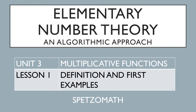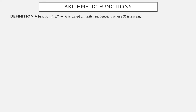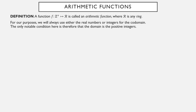We start the third unit in the course, beginning with multiplicative functions. But before we talk about multiplicative functions, we're going to define something called an arithmetic function. A function is called arithmetic if its domain is the positive integers 1, 2, 3, 4, and so forth, and the codomain is any ring. For us, the codomain is always going to be real numbers or integers. The only real notable condition here is that the domain is the positive integers.